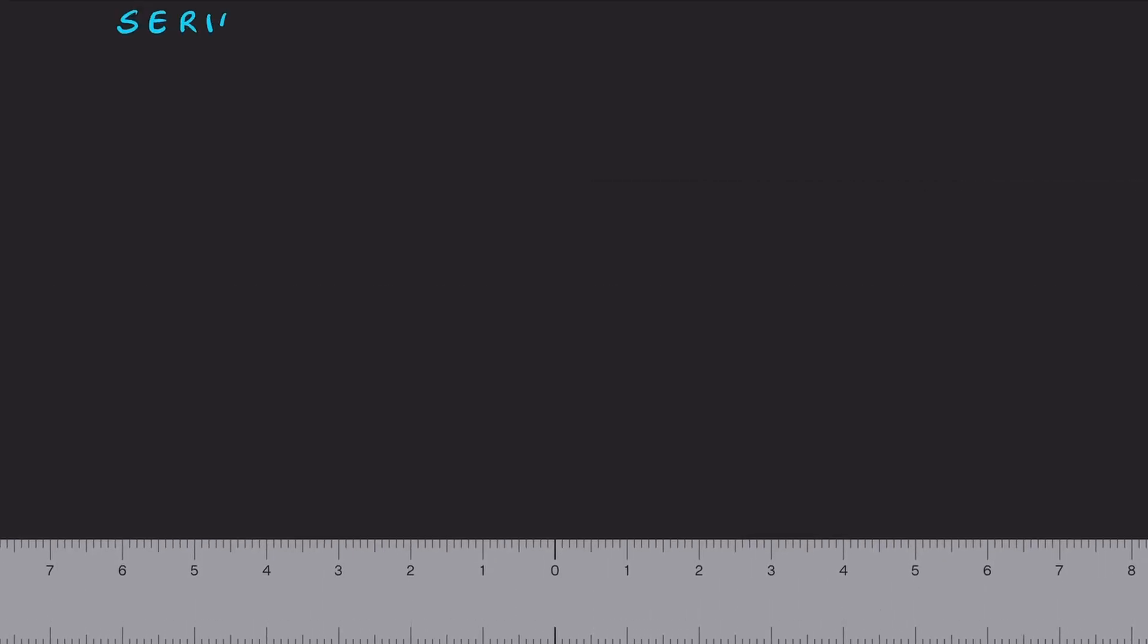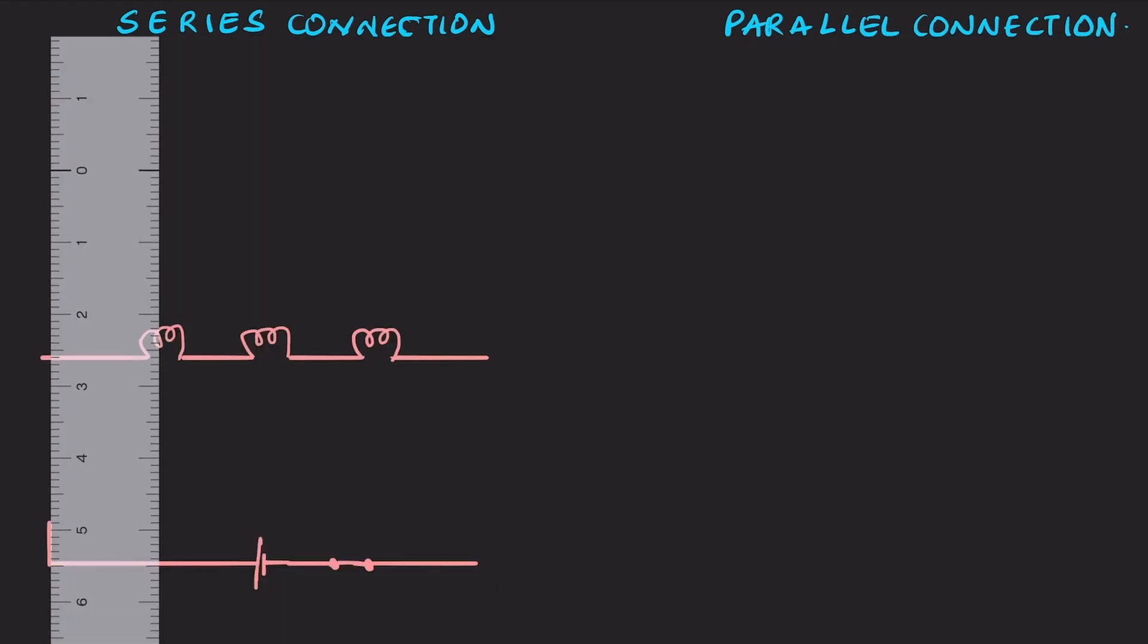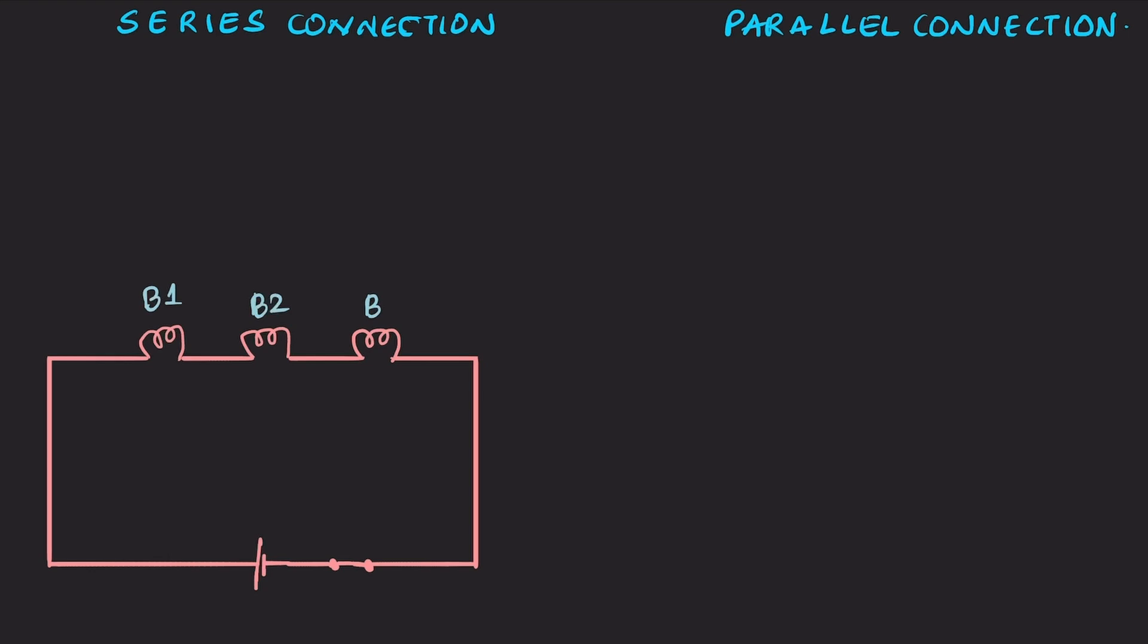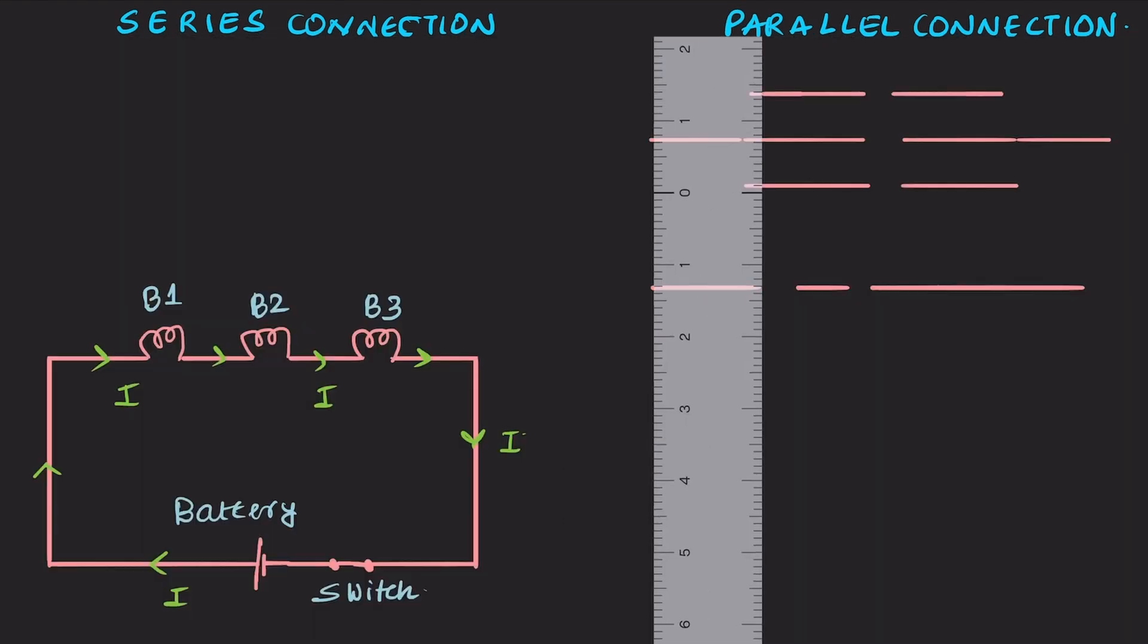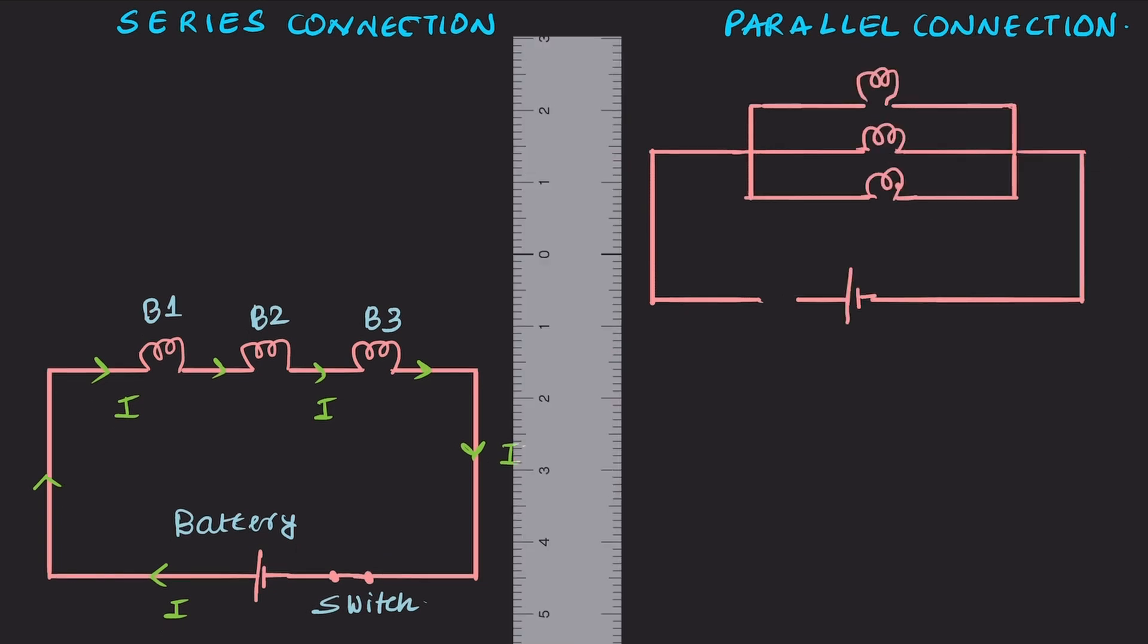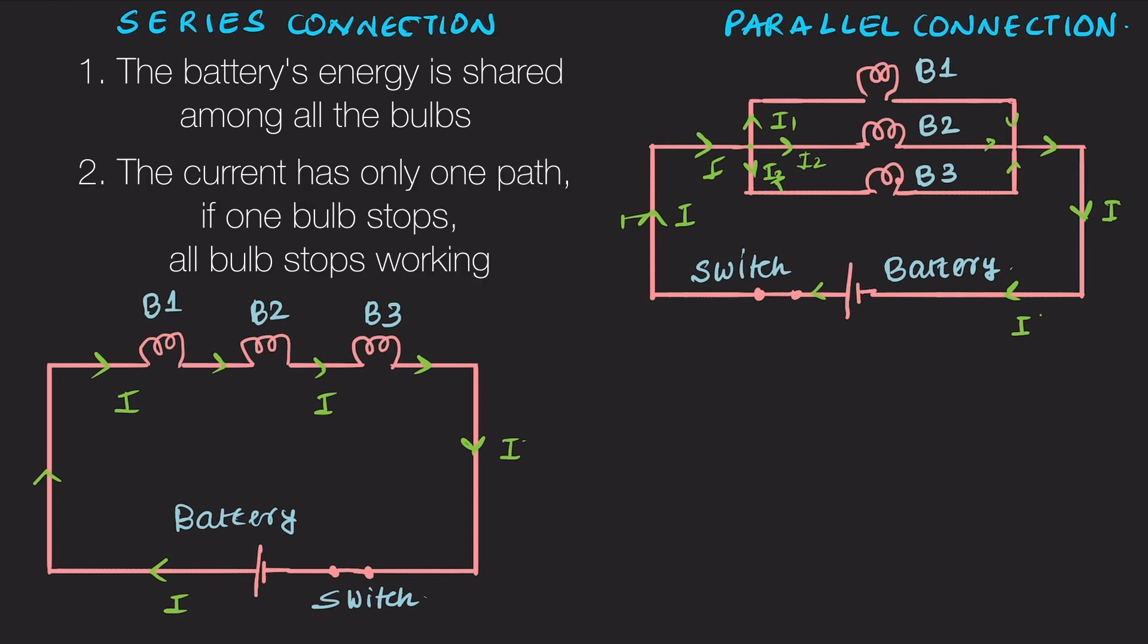Now let's wrap this up by looking at the key takeaways from both series connection and parallel connections. What I'm drawing here is called a schematic diagram. Instead of drawing a full realistic looking battery or a proper illustration of a bulb, we just use symbols. We use schematic diagrams to keep things simple, neat and effective. So here is the schematic diagram for a series connection. And the key takeaways are, the battery's energy is shared among all the bulbs. So the more bulbs you add, the dimmer they get. The current has only one path. So if one bulb stops working, the whole chain of bulbs goes off.